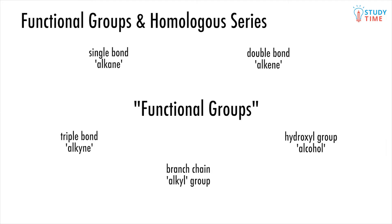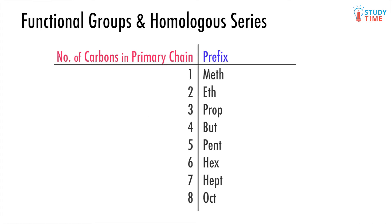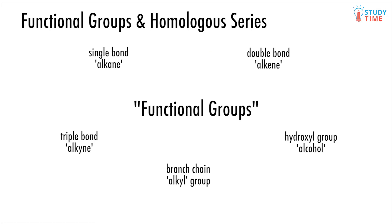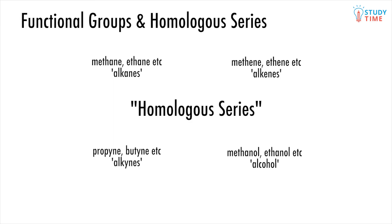Hopefully you're beginning to see where I'm getting with this. While the number of carbons gives the prefix to the compound names, it is the functional group which gives the suffix. A group of compounds that all have the same functional group is called a homologous series. For example, alcohols are a homologous series — they all have the same functional group, and the difference between different alcohols is the length of the carbon chain. This will become clearer as we work through naming some different homologous groups.